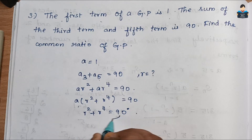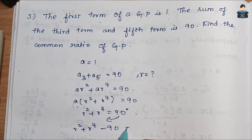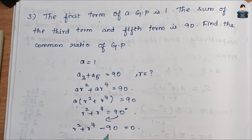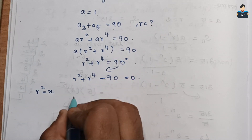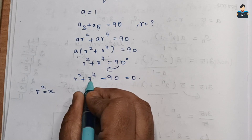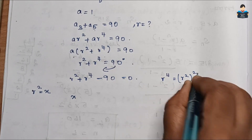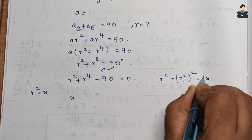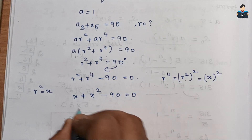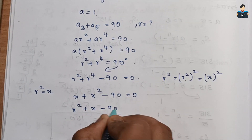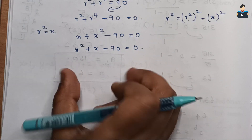So r⁴ + r² − 90 = 0. This is in quadratic equation format. We substitute x = r², so r⁴ = (r²)² = x². The equation becomes x² + x − 90 = 0, which is now in standard quadratic format.